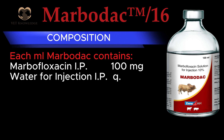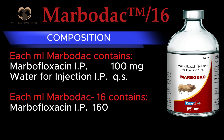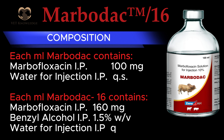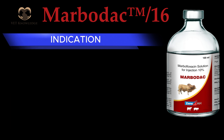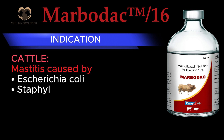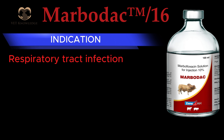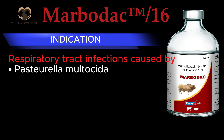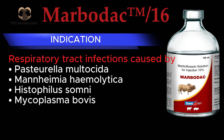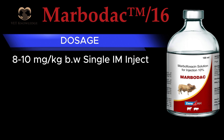Marbodex — composition: each ml contains active agents against Staphylococcus spp. and Streptococcus spp., as well as respiratory tract infections caused by Pasteurella multocida, Mannheimia haemolytica, Histophilus somni, and Mycoplasma bovis. Dosage: 8–10 mg per kg body weight as a single IM injection. Not more than 20 ml to be injected at a single site.